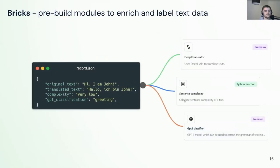What's really nice is that you don't rely only on standard Python functions — you can also use outside APIs or toolkits to enhance and enrich your records for much more complex labeling functions with not that much code. For example, using Bricks, which is an open-source collection of common NLP tasks we created at Kern.ai, you can use pre-built bricks to enrich your records. For example, a translator, sentence complexity calculations, and zero-shot classification with GPT-3 to enrich your data.